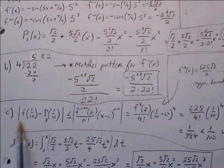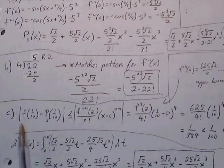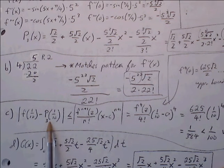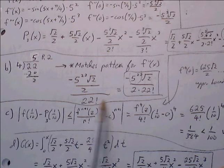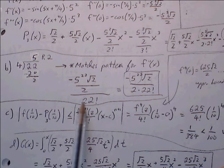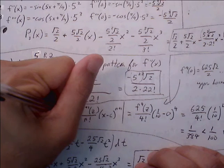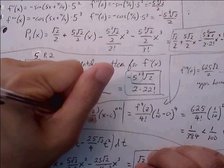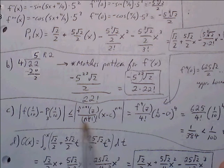The remainder formula uses the (n+1)th derivative — here the 4th derivative — evaluated at some z, divided by (n+1) factorial, times (x − c)^(n+1). We need the maximum value the 4th derivative can take on. The 4th derivative involves another application of the chain rule: negative cosine of u becomes sine of u times u prime, adding another factor of 5.